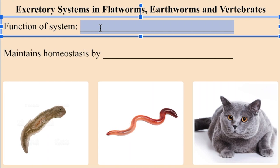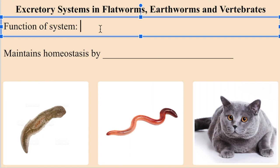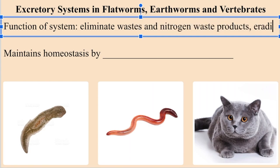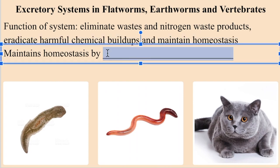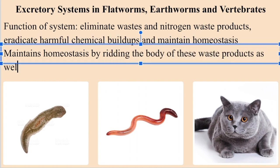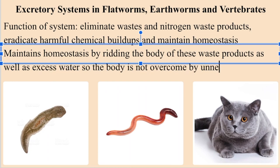Your body is constantly taking in materials such as food, and your cells are also constantly producing material byproducts. A critical bodily function is a system that eliminates or discharges waste and unneeded materials. That is the function of the excretory system. Put more eloquently, its function is to eliminate waste and nitrogen waste products, eradicate harmful chemical buildups, and maintain homeostasis. The excretory system essentially maintains homeostasis by ridding the body of these waste products as well as excess water, so that the body is not polluted or overcome by materials that it does not need.